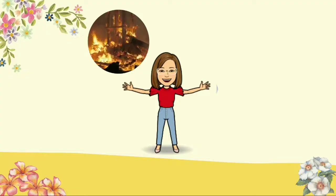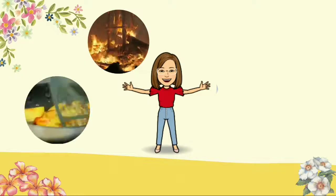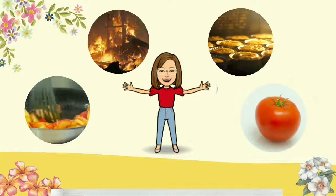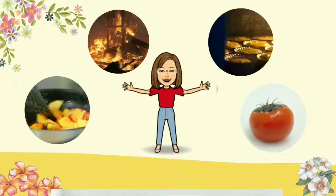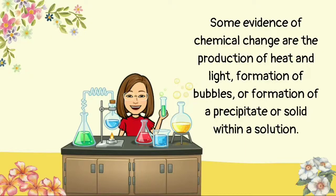There are other processes that cause chemical changes. These are burning, cooking, baking, and rotting. Cooking and burning involve the application of heat, which causes the materials to change in their state and composition. When this happens, a new substance and different properties or products are formed. Some evidence of chemical change includes the production of heat and light, formation of bubbles, or formation of a precipitate or solid within a solution.